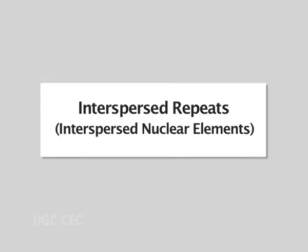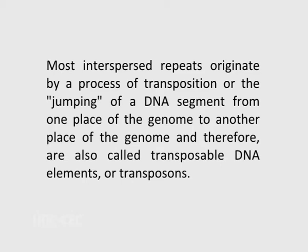Next, let us learn about the interspersed repeats or interspersed nuclear elements. Interspersed repeats are repetitive DNA sequences in which the repeat sequences do not lie adjacent to one another as in tandem repeats, but are dispersed throughout the genome. They are found in all eukaryotic genomes. Most interspersed repeats originate by transposition — the jumping of a DNA segment from one place of the genome to another — and are therefore also called transposable DNA elements or transposons.